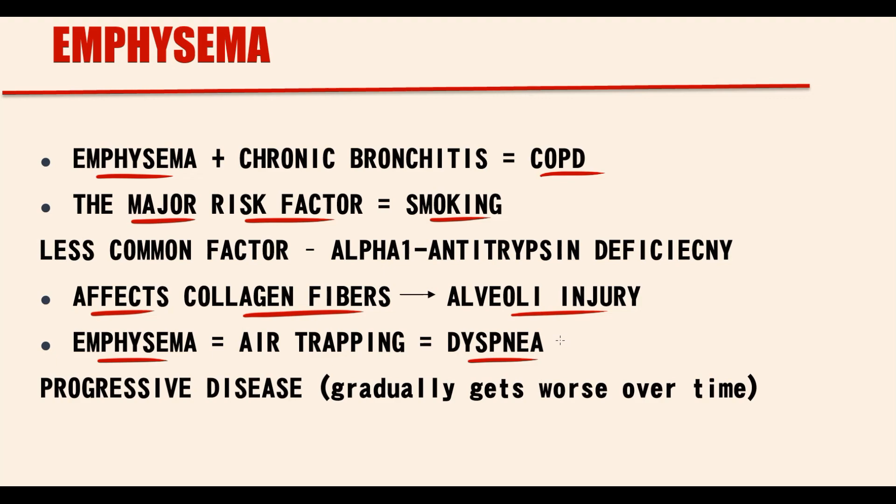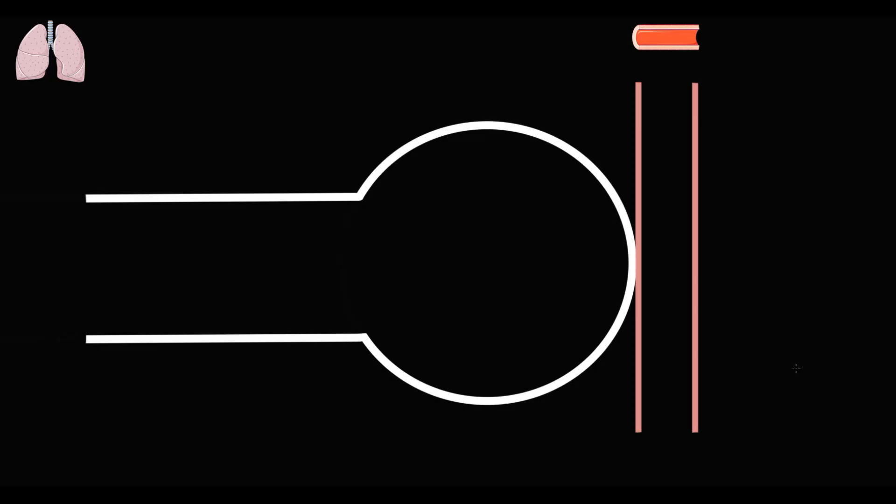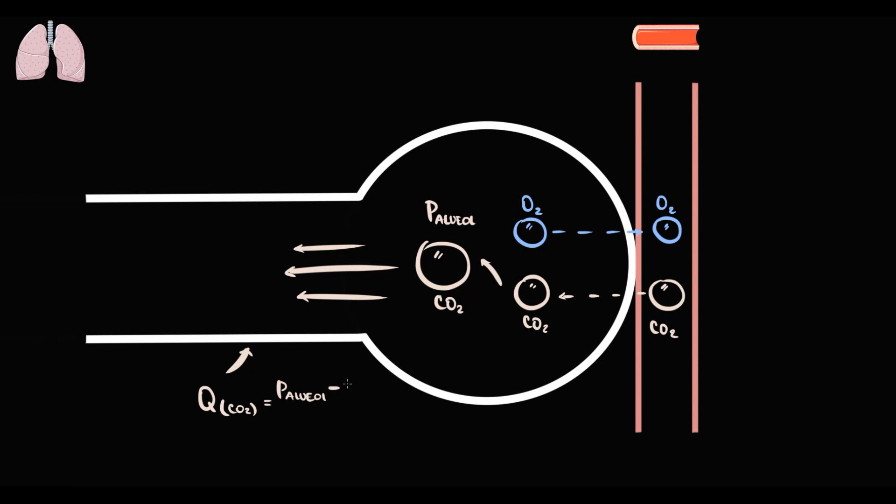To explain the pathogenesis of emphysema, recall that in alveoli gas exchange occurs between blood that is saturated with carbon dioxide and alveoli that are full with oxygen. Oxygen goes into the blood and carbon dioxide goes into the alveoli. Then alveoli by expiration push out carbon dioxide into the external environment. The airflow on expiration equals pressure inside the alveoli minus pressure in the external environment divided by resistance of the airways.